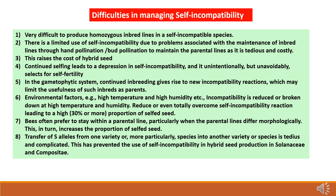There are some difficulties and barriers in managing self-incompatibility. It is very difficult to produce homozygous inbred lines, and there is limited use of self-incompatibility due to problems associated with maintenance of inbred lines, which raises the cost of hybrid seed production. Continued selfing leads to a depression in self-incompatibility, and there are limitations in the usefulness of inbred parents. Environmental impacts include high temperature and humidity resulting in breakdown of self-incompatibility, which may lead to selfing in hybrid seed production. The breeding approaches are somewhat tedious and complicated.